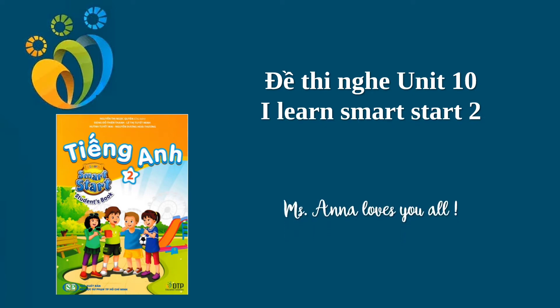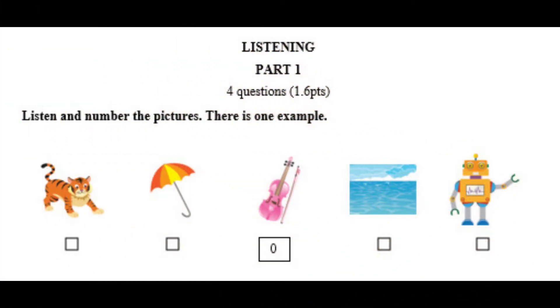Unit 10 Test. Part 1: Listen and number the pictures. There is one example. V, violin. Can you see number 0? Now you listen and number the pictures.